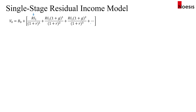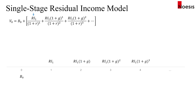We do this until infinity — to perpetuity — and discount all of this residual income by the cost of equity for each year. This is illustrated through a timeline where we have B0 at time zero, and the residual incomes for each year grow by a factor of one plus G.